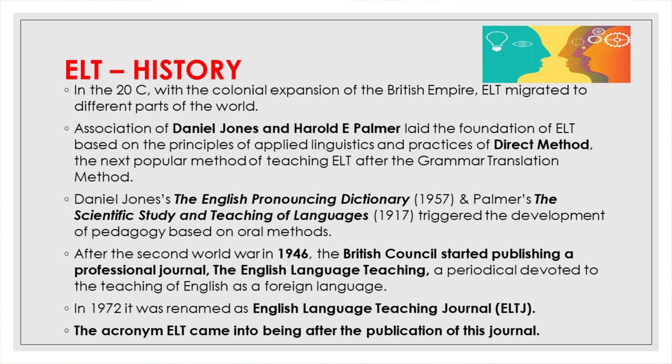After the Second World War, in 1946 — a year important for ELT — the British Council started publishing a professional journal. It was titled The English Language Teaching, and the acronym ELT came into being after the publication of this journal. Later in 1972, it was renamed as English Language Teaching Journal, that is ELTJ.